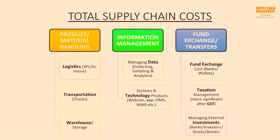A company spends on logistics to deliver a product to its customers. Another cost is on transportation through trucks. A company also spends on renting warehouses and storing inventory. On the information management front, examples include expenditure on managing data by hiring people, subscribing to different softwares, collecting samples, and analyzing data to come up with meaningful results. Another example is the expenditure on building systems and technology products like websites, apps, order management systems, and warehouse management systems.